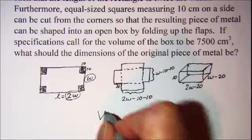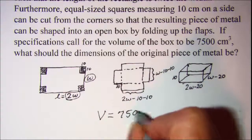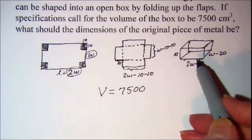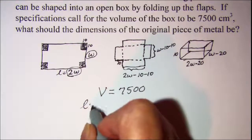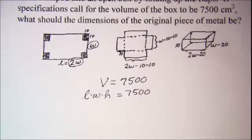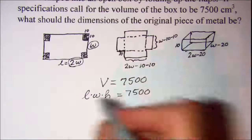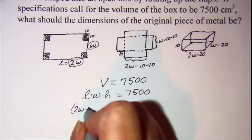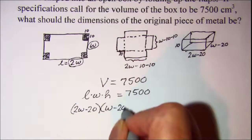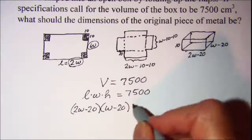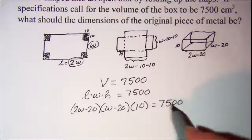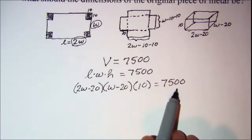So the volume has to be 7500 cm³. The volume of a rectangular prism is length times width times height, so length times width times height equals 7500 cm³. My length is 2W minus 20, my width is W minus 20, and my height is 10. So now I have an equation in W which I can solve.